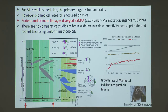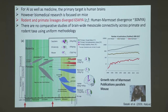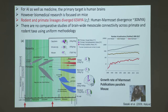In AI and medicine, the primary target is human brains. But if you look at biomedical research, it's mostly on mouse brains. The rodent and primate lineages diverged more than 60 million years ago. We are studying the marmoset monkey in the primate lineage, which diverged 30 million years ago — fewer generations separate us from marmosets than from mice. This has been an international collaboration that includes IIT Madras; the marmoset data was gathered in Japan.